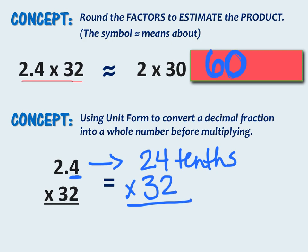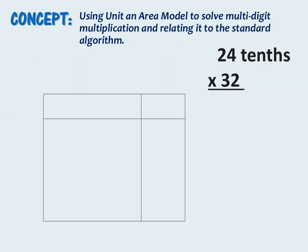Converting to the unit form will make it a lot easier when you get ready to multiply, which we'll do next. Now we'll use the area model to multiply our factors together. We have 24 tenths times 32. We're going to take our decimal factor and unbundle it across the top. We have 20 tenths plus 4 tenths.